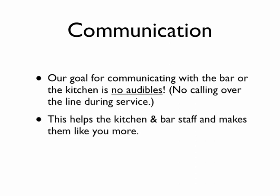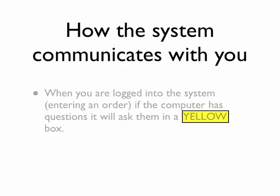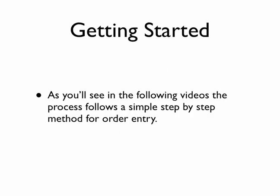This helps the kitchen and bar staff and makes them like you a whole lot more. In the next couple of videos, we're going to go through how the system communicates, but we'll start by saying that when you're logged in or entering an order, if the computer has a question, it will ask it in a little yellow box in either the upper right or upper left corner of the screen — we'll show this to you in the next video. The process follows a pretty simple step-by-step method for order entry. For instance, if you were ordering a hamburger, the system might ask you for a temperature, then ask if you want lettuce, tomato, or cheese, and then ask if you wanted french fries.